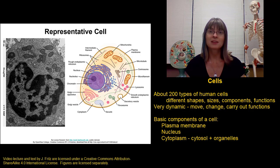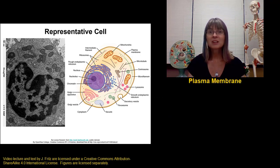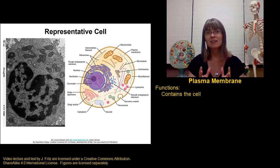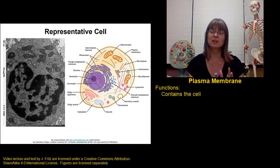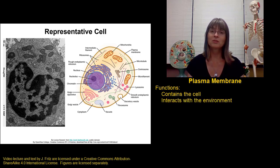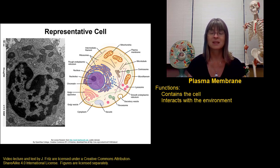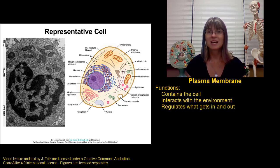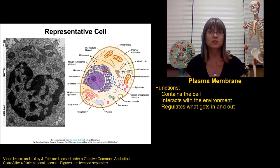We're going to start by focusing on the plasma membrane. The plasma membrane has three important functions. First and foremost, it contains the cell and separates it from the environment — that's what lets the cell maintain an environment inside that's different from its surroundings. Second, the plasma membrane is really important for interacting with other cells and with the environment, allowing cells to connect and work together. Finally, the plasma membrane regulates what gets in and out of the cell — letting nutrients in, keeping toxins out, and moving wastes out.